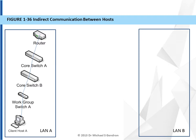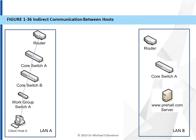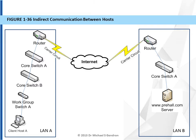We have LAN B, which looks similar to LAN A in that there's an edge router, one or more core switches or other types of switches, and a server at www.prenhall.com. These devices are also interconnected by some type of media. The two networks, LAN A and LAN B, are interconnected via carrier circuits and the internet. The technical details of those connections don't matter because we're discussing indirect communication within this animation.